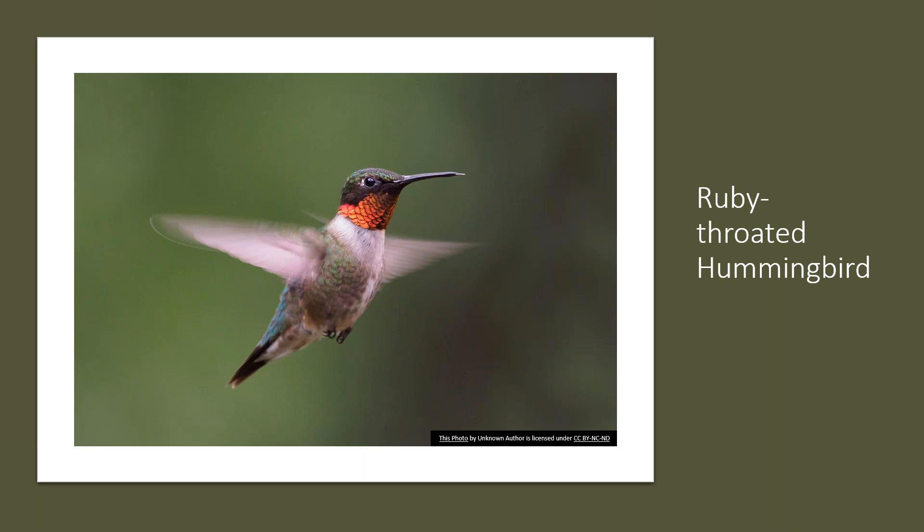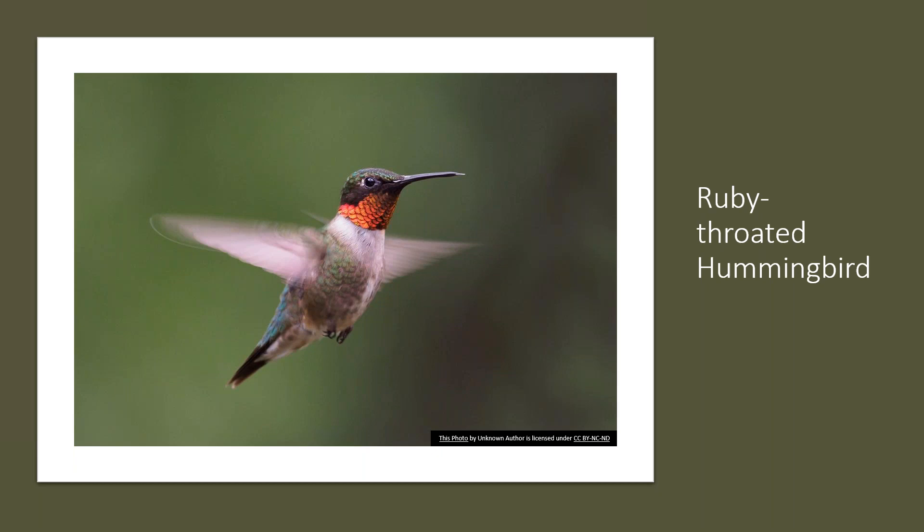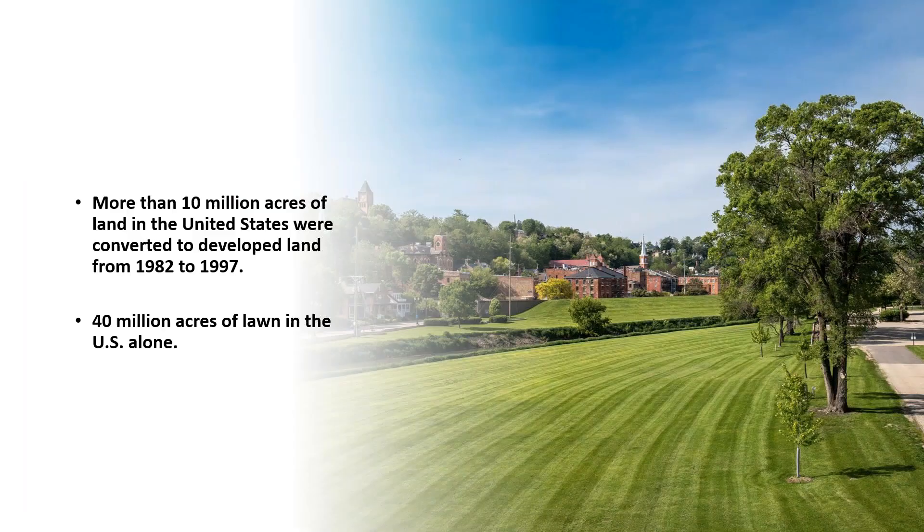And then the fan favorite pollinator, the ruby-throated hummingbird — we love this pollinator so much we hang up fake flowers with sugar water to provide food for them. It's important to know that native plants equal a healthier landscape. Native plants require less water than lawns, help prevent erosion with very deep roots, provide shelter and food for wildlife throughout the year, promote biodiversity and stewardship, and are adapted to the local climate so they can handle more climatic swings.